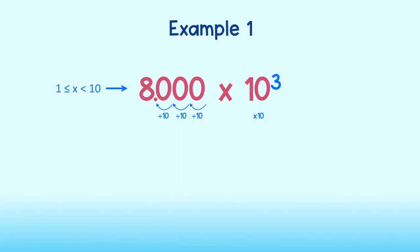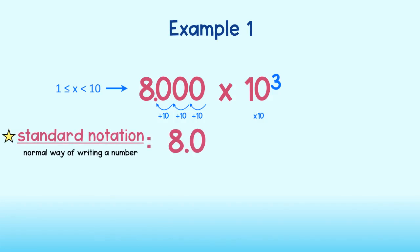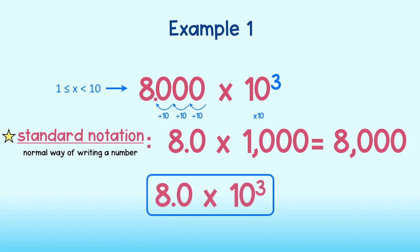If we want to double check our answer, we can write the number in standard notation. Standard notation is just the normal way of writing a number. 8 times 10 to the third power, or 1,000, equals 8,000. Good. The number 8,000 written in scientific notation is 8 times 10 to the third power.